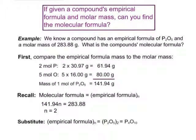Here is our final challenge when dealing with empirical and molecular formulas. Can we find the molecular formula if we're given the compound's empirical formula and molar mass? We should be able to, because the molecular formula is the actual chemical formula the compound exists as, while the empirical formula is just the reduced version — the simplest ratio of the different elements. So if we're given the empirical formula and the molar mass, we can find the molecular formula.